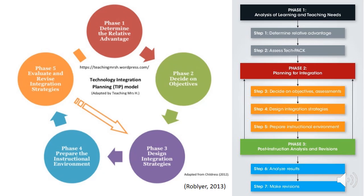The last model we will look at is the TIP model, which stands for Technology Integration Planning. This model uses a step-by-step approach to help teachers analyze their usage of technology in the classroom along with its effectiveness. In phase one, you will determine the relative advantage. Phase two, decide on your objective for the lesson. Phase three, design integration strategies. Phase four, prepare the instructional environment. And phase five, evaluate and revise integration strategies. This reflective model allows teachers to analyze what worked and what needs revision, and is used for planning specific lessons while focusing on student outcome.